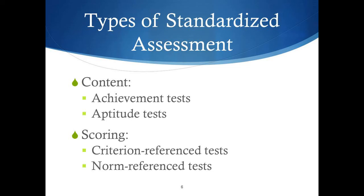There are several types of standardized assessment. Based on the content being assessed, we have achievement tests, which measure how much students have learned in various academic areas, and aptitude tests, which measure students' potential in certain areas and are typically content-free, like intelligence tests. Based on the scoring procedure, we have criterion-referenced tests, where the score is determined by comparing the individual's performance to predefined standards — also called standards-based scoring in education. Grading here is based on an interpretation of a student's degree of mastery of the learning goals.